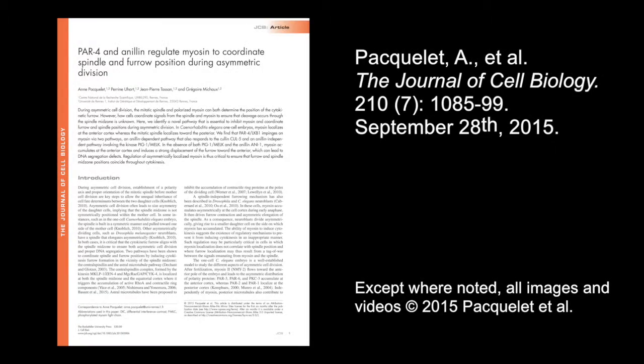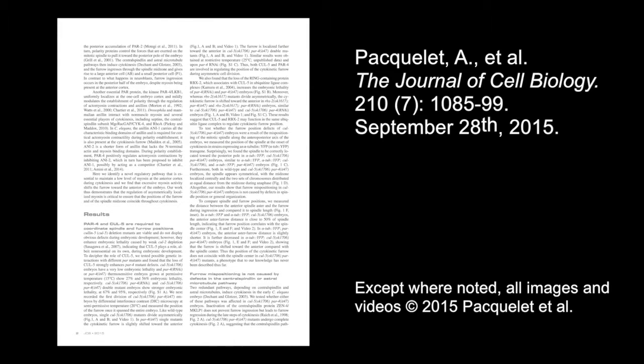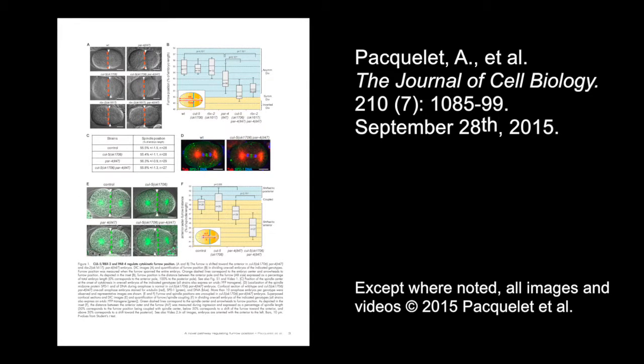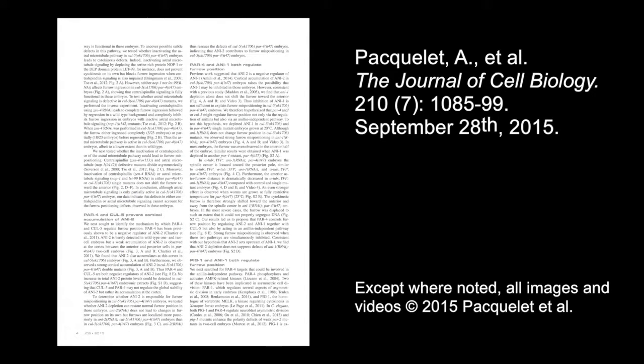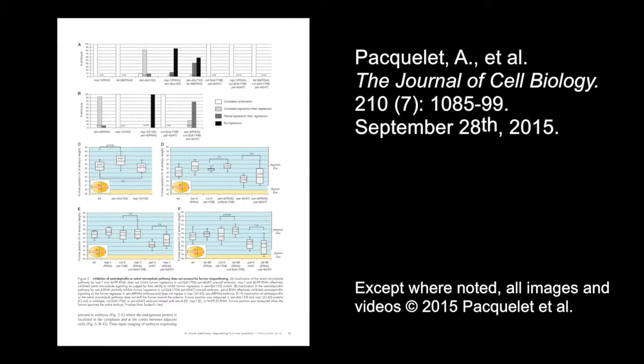Pakle and colleagues now want to investigate exactly how PIG1 and anilin-1 regulate myosin and how this is coordinated with the cell cycle. In the meantime however you can learn more about how C. elegans embryos coordinate spindle and furrow position during asymmetric division in the paper by Pakle et al. published in the September 28th 2015 issue of the Journal of Cell Biology.